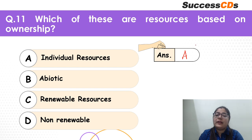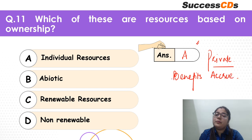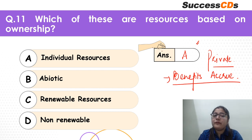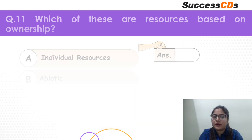Ownership is all about individual resources, which are also known as private resources. The benefits accrue only to individuals. For example, your private home — no one else can come there. The benefits accrue to a limited set of people, which is your family. That is the concept of ownership — you are owning something, and that is why it is your individual resource.